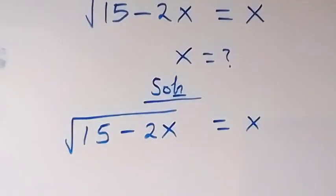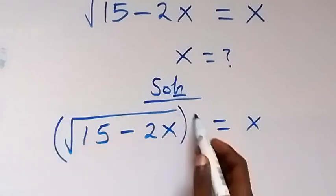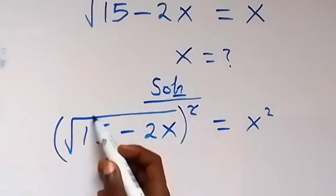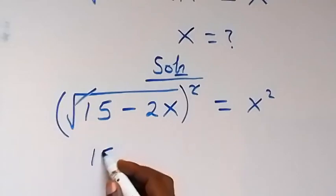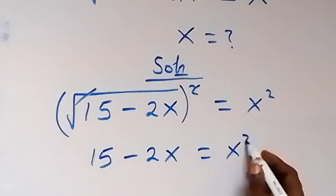We can take the square on both sides. We square this side, also we square this side. The square cancels the square root. And this gives us 15 minus 2x equals to x squared.